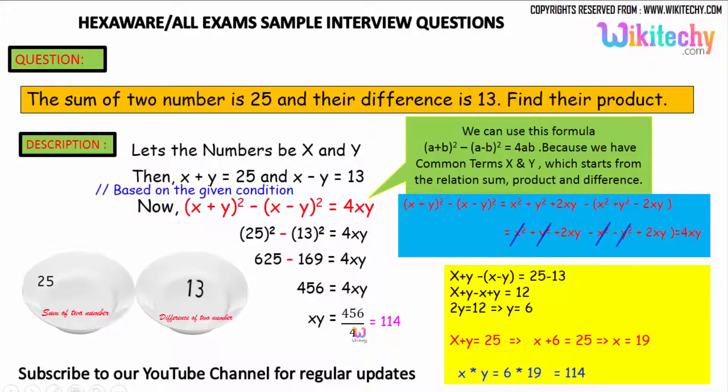Alternatively, x + y = 25 and x - y = 13. Solving these equations, x = 19 and y = 6. So 6 into 19, the product is 114. This is option 2.